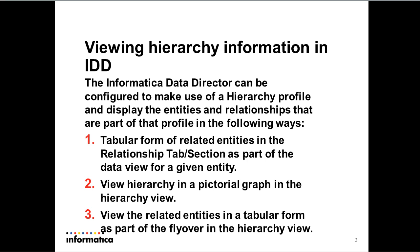The second way is you could view a pictorial graph where each entity is represented as an icon with a given pre-configured image, and a line is drawn with a specific color between the different icons to denote the relationship between them and the relationship type. Then within the HM Canvas itself, you could have a flyover section where you can view the data or the relationship in a tabular form. Within the flyover, you could also query so that you get a specific set of related entities rather than viewing all the related entities shown in the relationship tab.